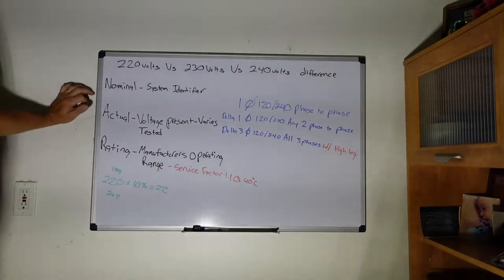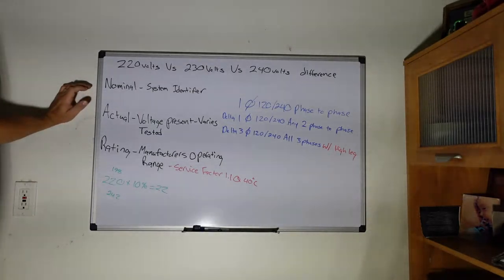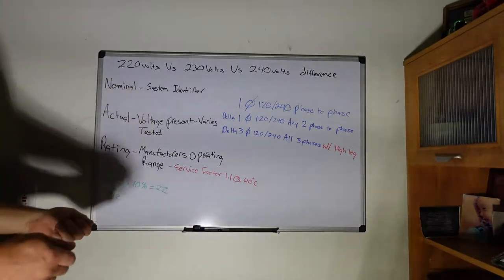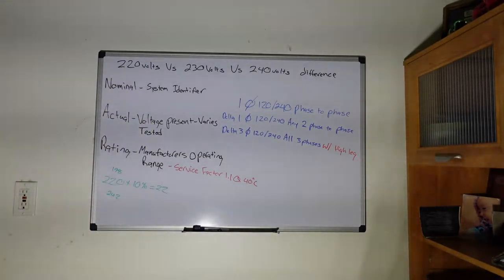Then you're going to have your actual voltage, which is the voltage present. It's what you're going to test and actually get. It can vary from anywhere I've seen it as low as like 219 to as high as like 242. At the utility, there is a certain range that the utility has to provide to be within their guidelines.